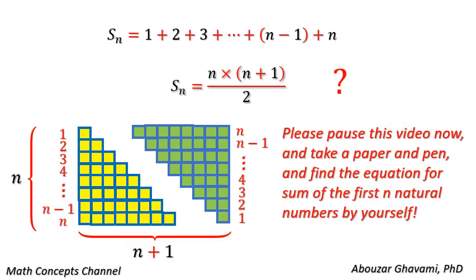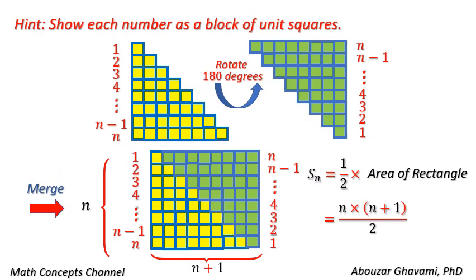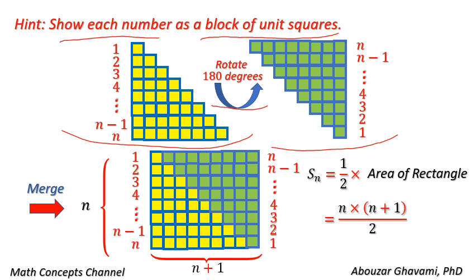Please pause this video now and take a paper and pen and find the equation for sum of the first n natural numbers by yourself. As a hint, show each number as a block of unit squares, and form a block set of natural numbers from 1 to n. Then rotate this block set by 180 degrees to form a similar block set.